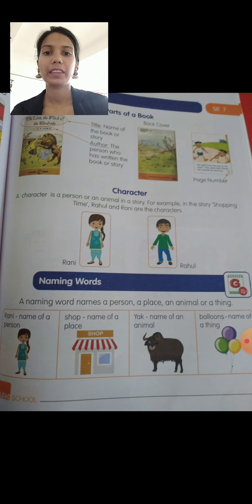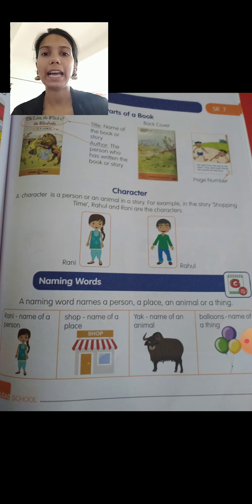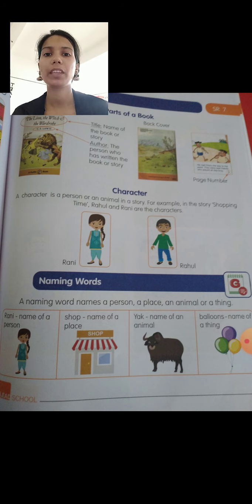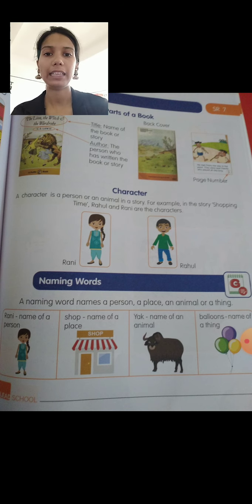Here we can see a character. What actually a character is? A character is a person or an animal in a story. For example, in the story Shopping Time, Rahul and Rani are the characters. There are two characters in the story: one is a girl, Rani, and the second one is a boy, Rahul.